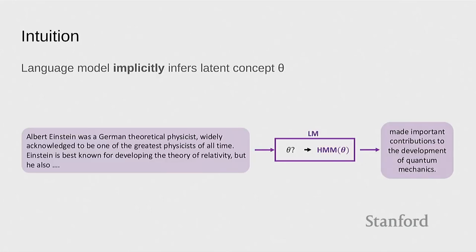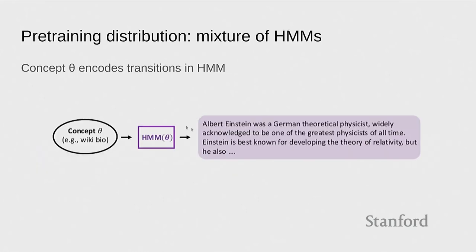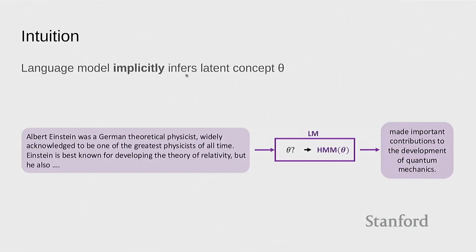You get your text, and theta is hidden because you don't observe it — but that's the data-generating process for the pre-training data. Now, what would language modeling try to do if asked to predict this text? I would argue that it implicitly has to infer the target concept somehow. So if you have an article about Albert Einstein, the model kind of needs to figure out: okay, this is probably a Wikipedia biography, and I'm going to generate things that look like Wikipedia biographies. The language model will probably try to implicitly infer theta approximately and then sample from the HMM.